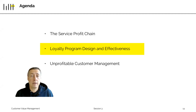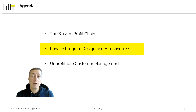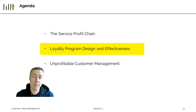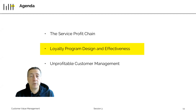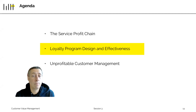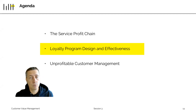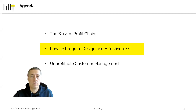Since the service profit chain may work on average, but maybe not work for every individual company, companies have come up with more straightforward solutions to link customer behavior to profits. The ideal case would be a kind of contract where we tell the customer: you get some kind of benefit in exchange for business you bring to us, and the more business you bring, the more benefit you get. This exists — it's called a loyalty program.